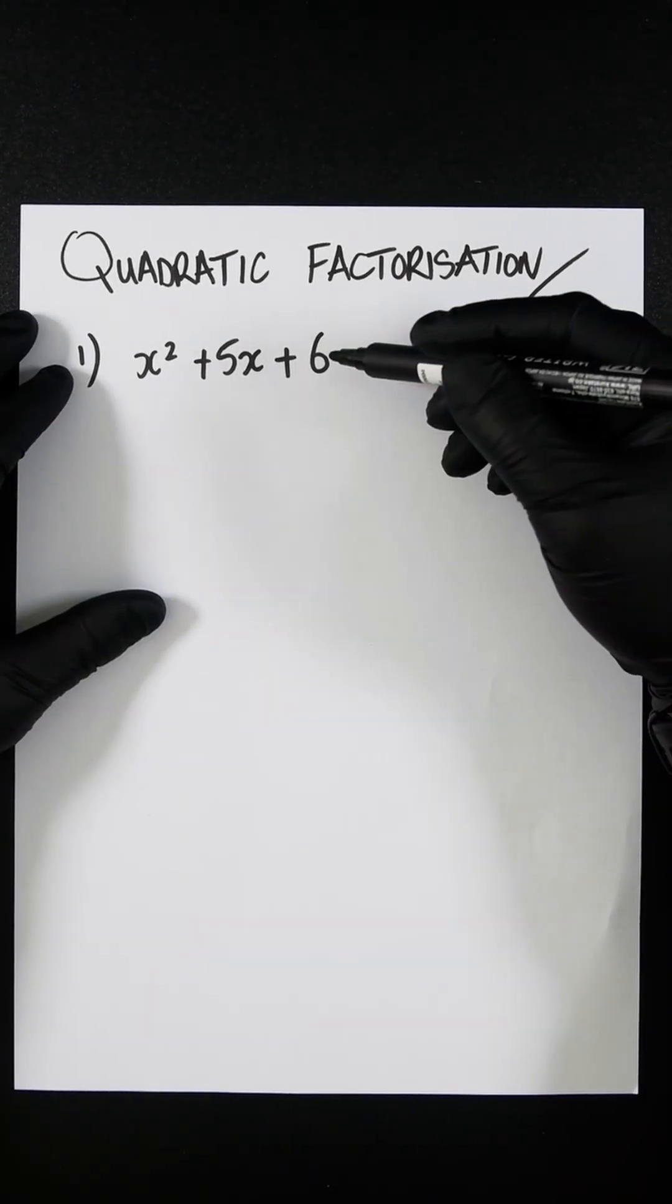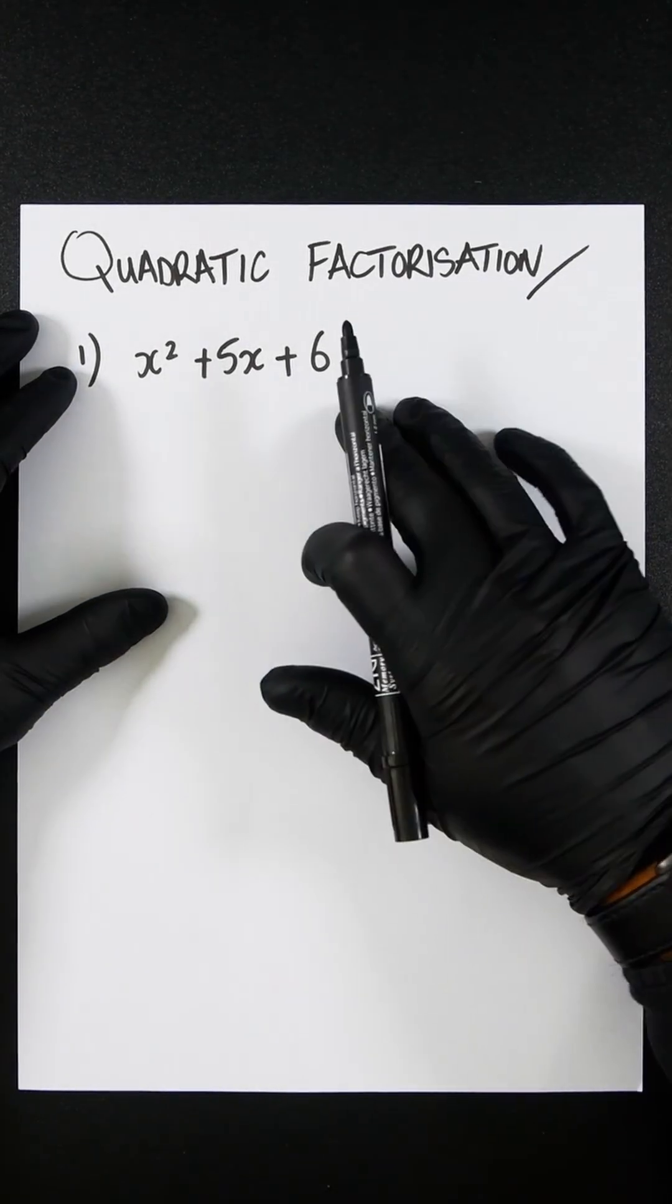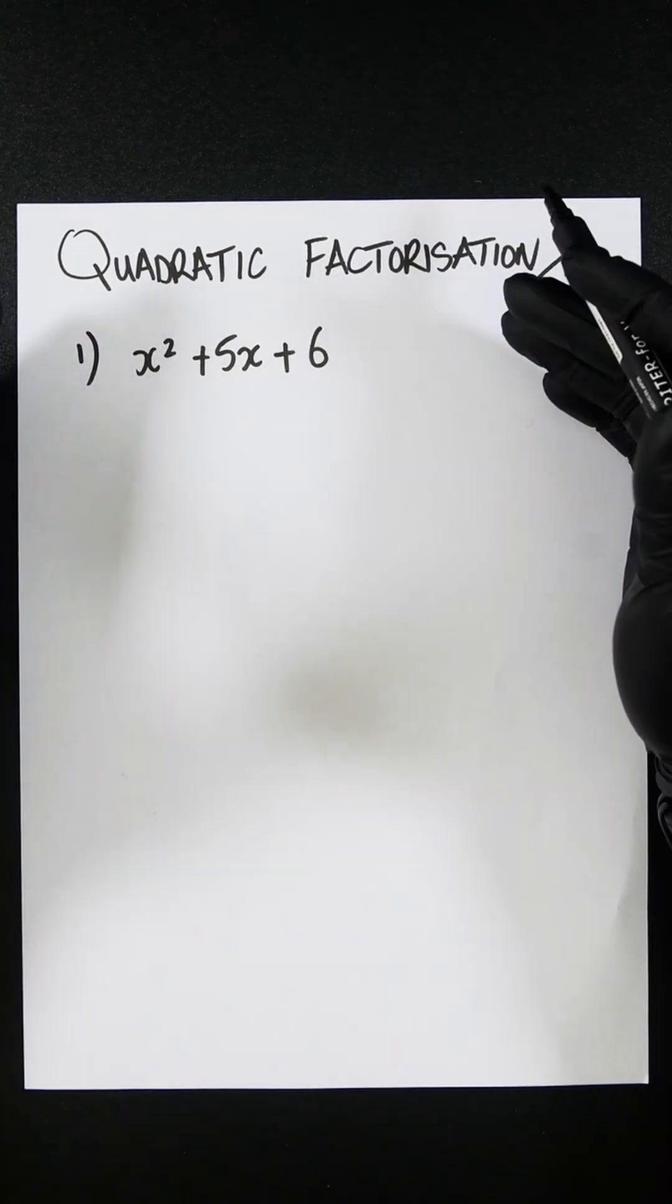When you factorize a quadratic, you're taking this entire expression and representing it in two brackets.